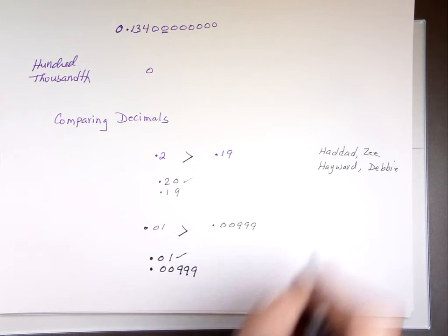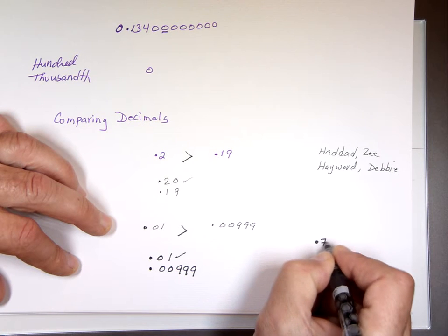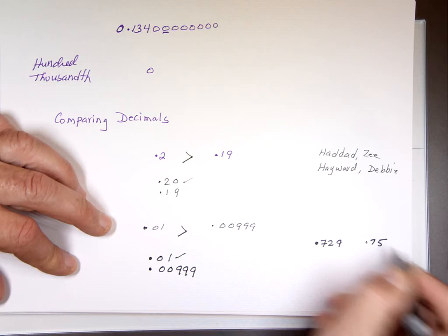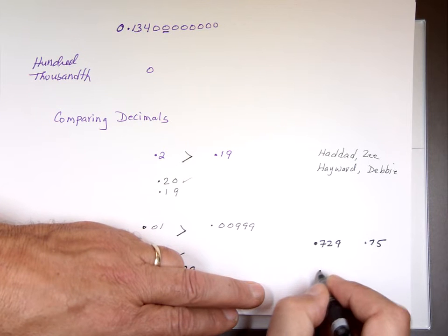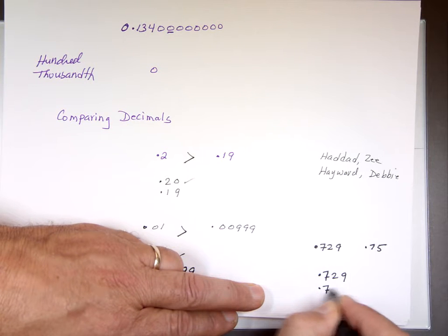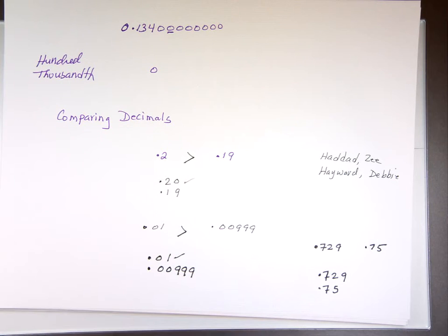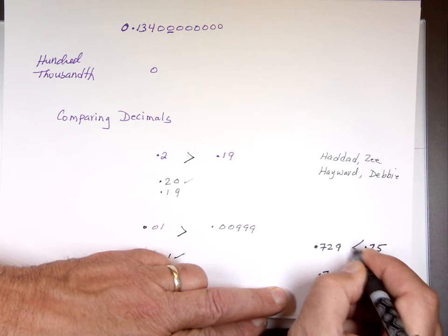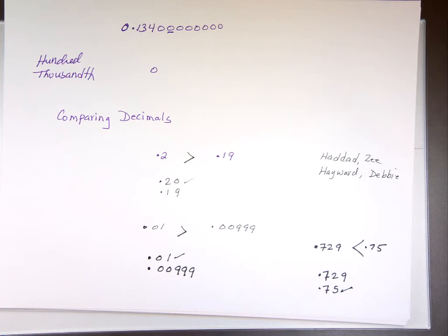0.729, another example. And 0.75. Again, put them on top of each other. It's easier to see that way. 7 is the same. We go to the next digit. 2 versus 5. 5 is bigger. So, 5 is bigger, which means the 2.9 is smaller. 0.29 is less than 0.75.